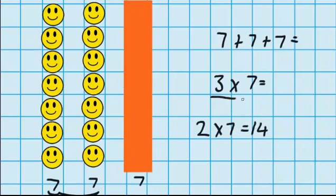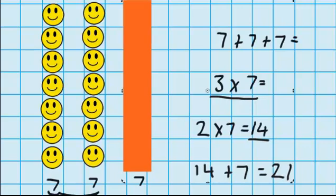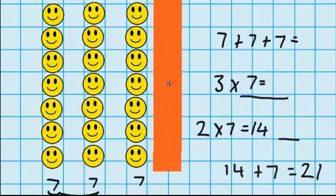So I needed to work out 3 groups of 7, but so far I've done 2 groups of 7. So I'm going to have to add 7 more smiley faces to this amount. 14 plus 7 equals 21. And if I move that rectangle over, you can see I was right. There's 21 smiley faces there.